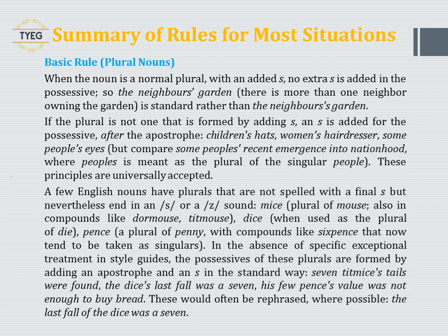Summary of rules for plural nouns: when the noun is a normal plural with an added S, no extra S is added in the possessive — so 'the neighbors' garden' (more than one neighbor) is standard. If the plural is not formed by adding S, then 's is added after the apostrophe: 'children's hats', 'women's hairdresser', 'some people's eyes' — but compare 'some peoples' recent emergence into nationhood', where 'peoples' is meant as a plural of the singular 'people'.